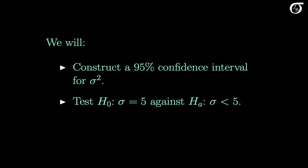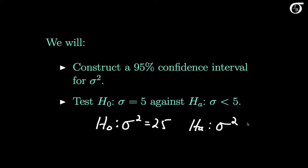We could equivalently write these hypotheses in terms of the variance: the null hypothesis that the population variance is 25, and the alternative hypothesis that the population variance is less than 25. The procedures we are about to use assume that we are sampling from a normally distributed population. These inference procedures for variances can work very poorly if the normality assumption is violated — they are not at all robust to violations of the normality assumption. The normality assumption is very important here, so let's see what a normal quantile-quantile plot of the data values looks like.